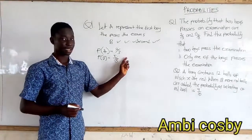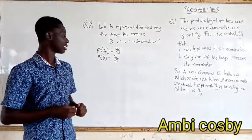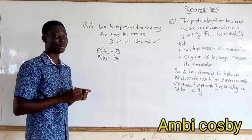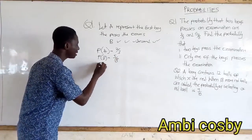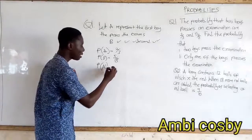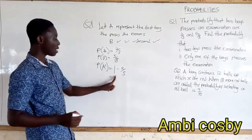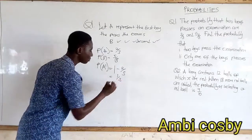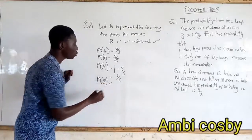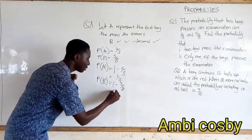Knowing this, we can find the probability that the two boys fail the exams. We find that by subtracting the given fractions from the total probability, which is 1. So the probability that the first boy fails the exam is 1 minus 2 over 3, which gives 1 over 3. And the probability that the second boy fails is 1 minus 5 over 8, which gives 3 over 8.